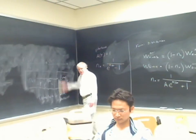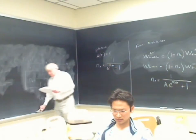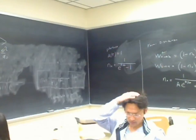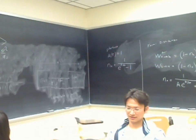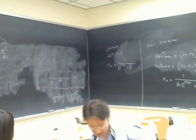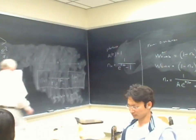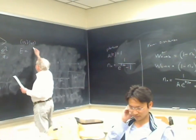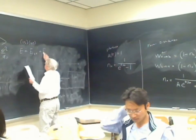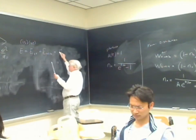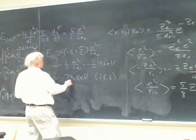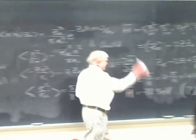Now we want to look at the excited states. It's relatively easy to get roughly what the structure is. If we have one electron in 1S and the other in NLM, the energy is E₁₀₀ + E_{NLM} + ΔE.